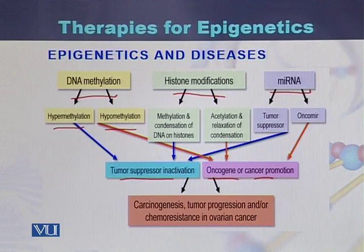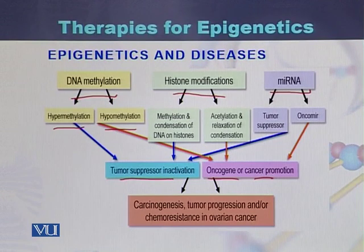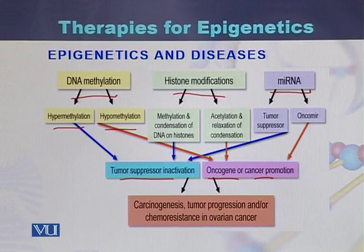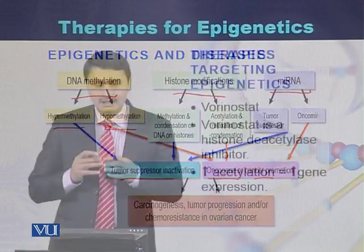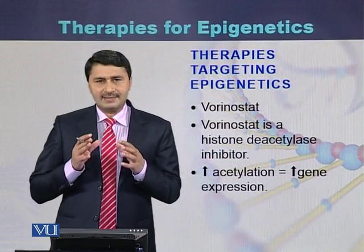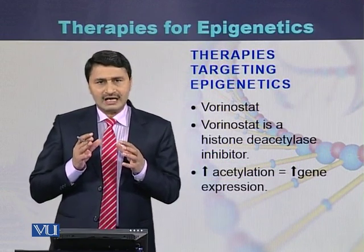In the case of miRNAs, they act as both oncogenes as well as tumor suppressors. So all these phenomena — DNA methylation, histone modifications, and miRNAs — are responsible for carcinogenesis, promotion of cancers, tumor progression, as well as the development of ovarian cancer.